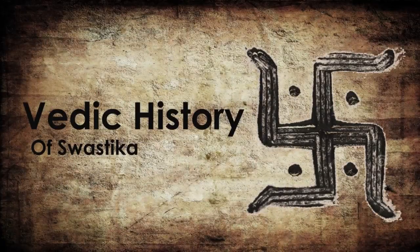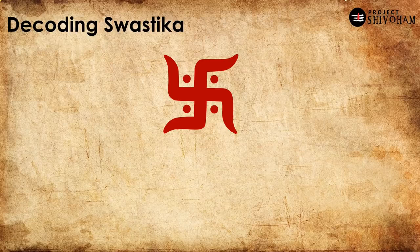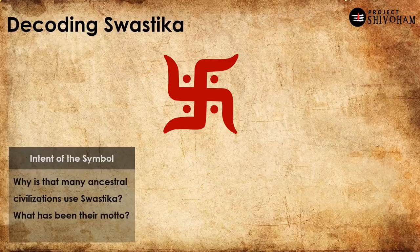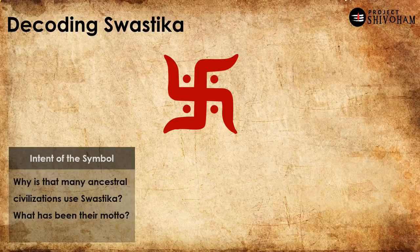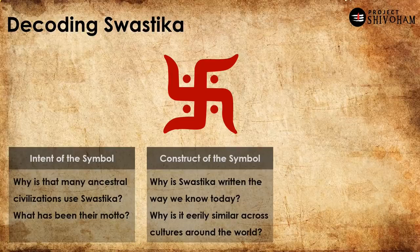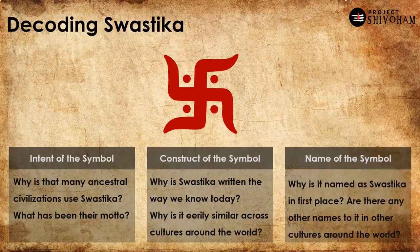And that brings us to the third chapter — understanding the Vedic history of Swastika and where it all started. Let us try decoding this mysterious symbol. This is not any standard; this is just my analysis. Any symbol has three very important components. The first is the intent of the symbol — why did ancestral civilizations use Swastika and what was their motto? The second is the construct of the symbol — why is Swastika written the way we know it today, and why is it eerily similar across cultures around the world? And the third is the name — why is it called Swastika in the first place, and are there other names for it in other cultures?